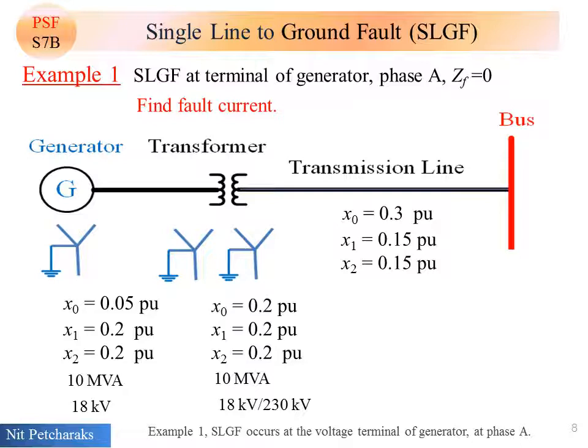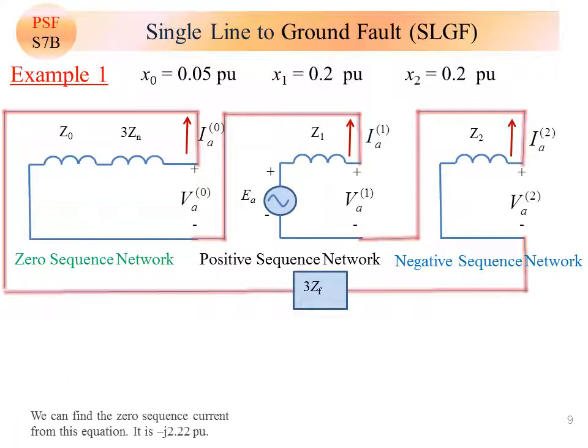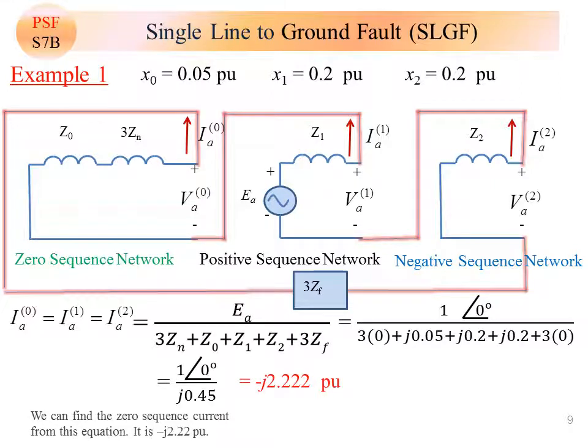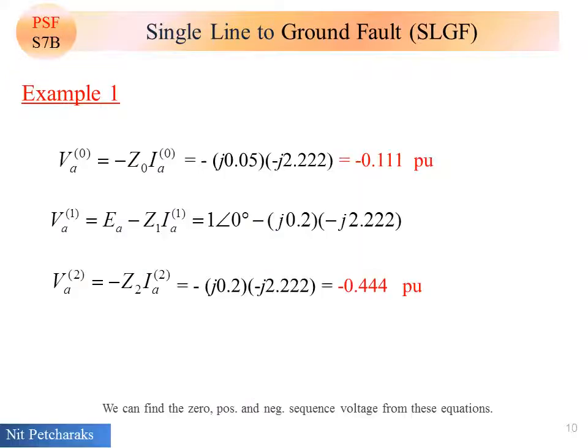Example 1, single line to ground fault occurs at the voltage terminal of generator at phase A. We can find a zero sequence current from this equation. It is minus J 2.22 per unit. We can find the zero, positive, and negative sequence voltage from these equations.